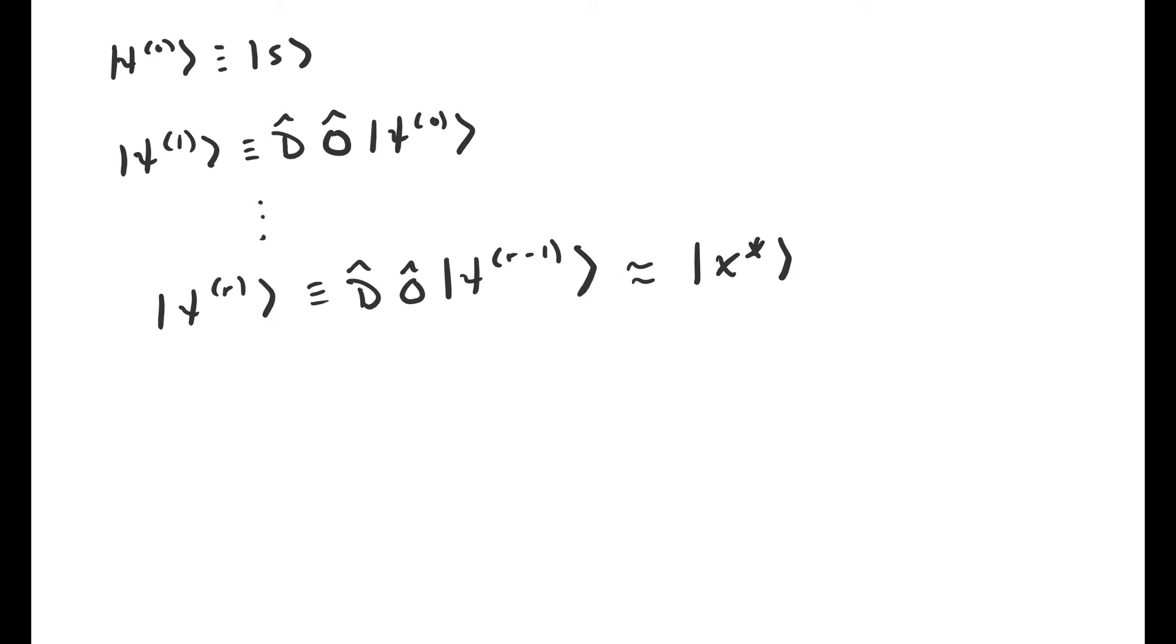We can always check that we have the right answer by just plugging in what we think the answer is and seeing if the oracle negates the amplitude of that state. So understanding Grover's algorithm is really tantamount to understanding what these two operators O and D do.